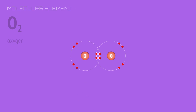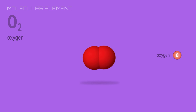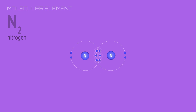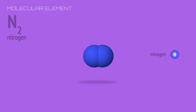In this video, we explore double covalent bonds, as in this dioxygen molecule, commonly referred to as oxygen. And we also look at a triple covalent bond, as in this dinitrogen molecule, commonly referred to as nitrogen.